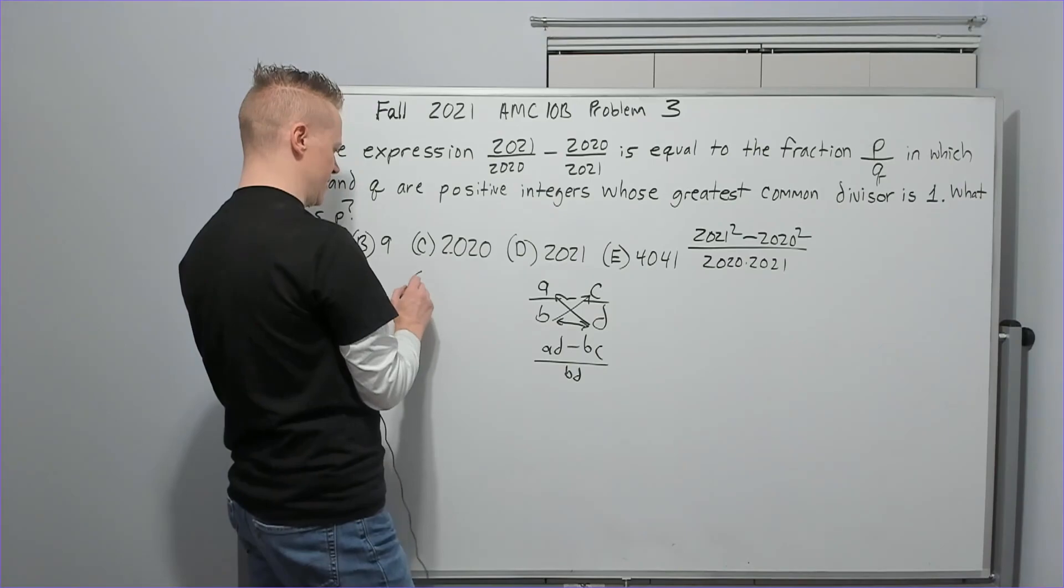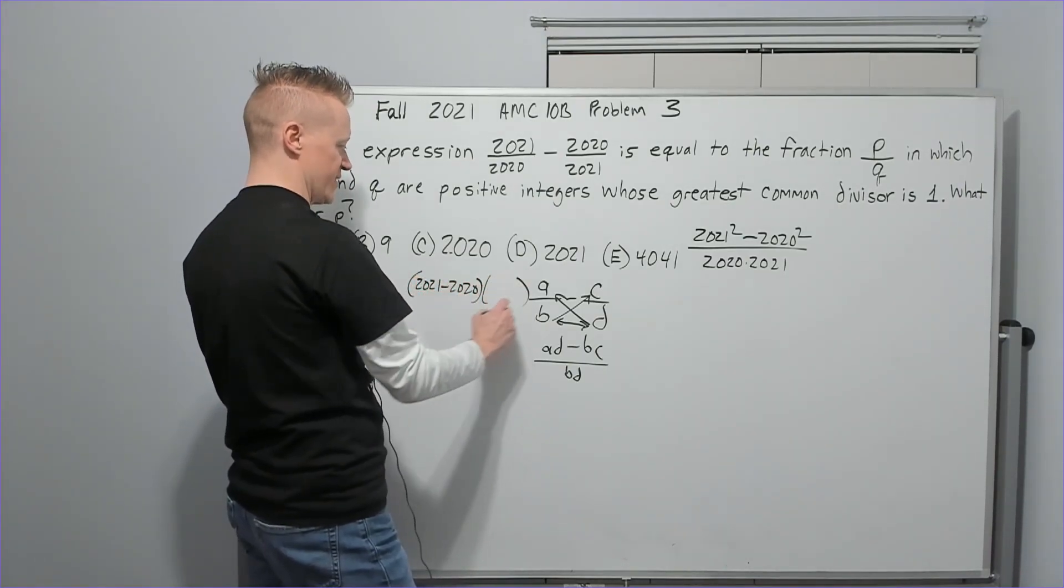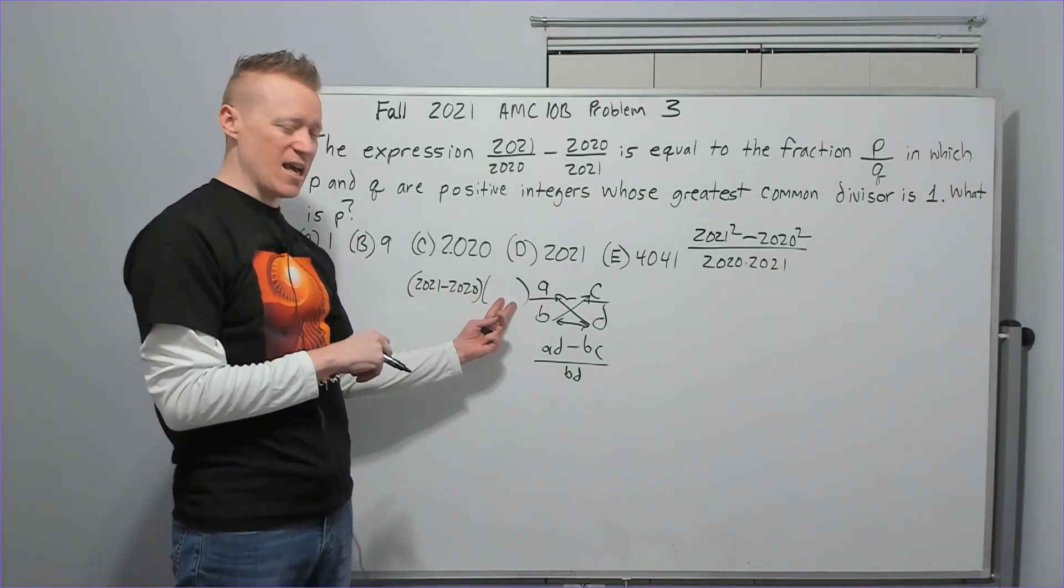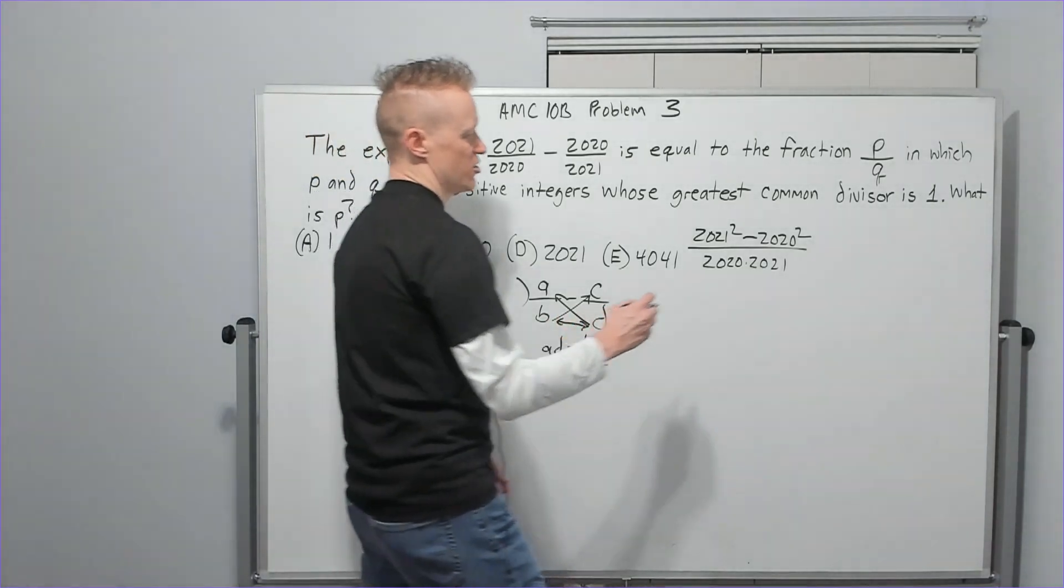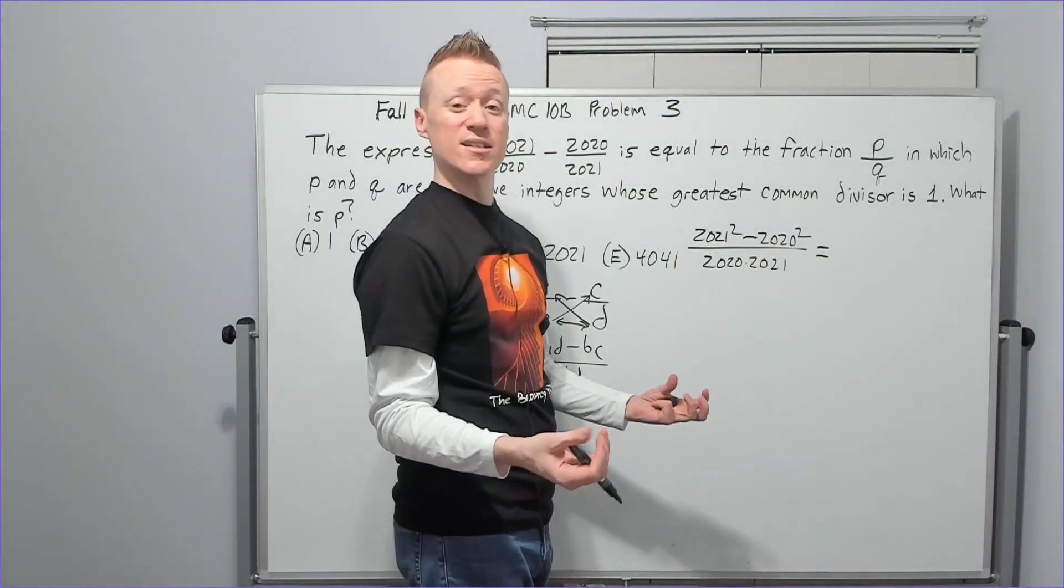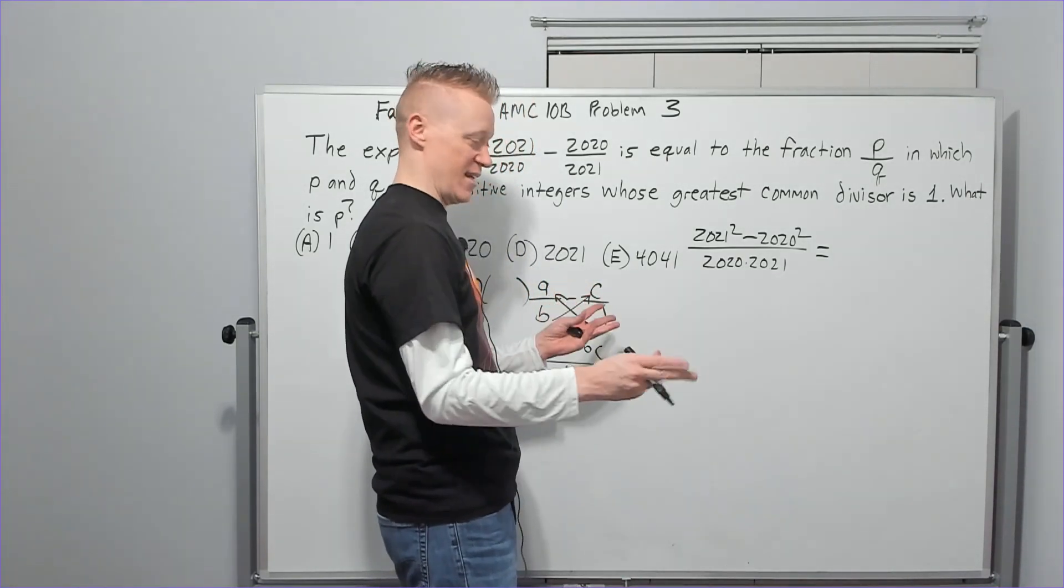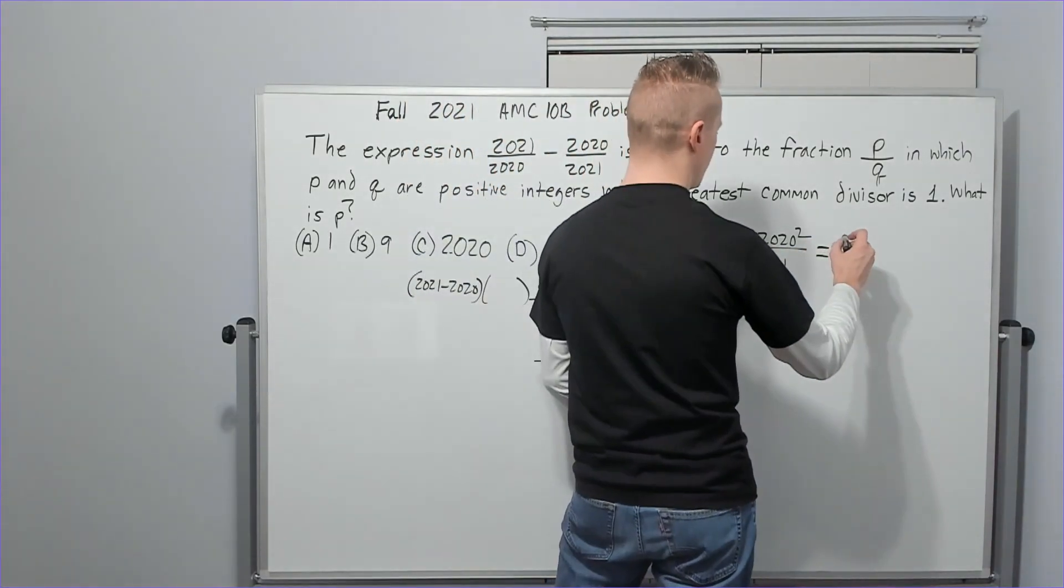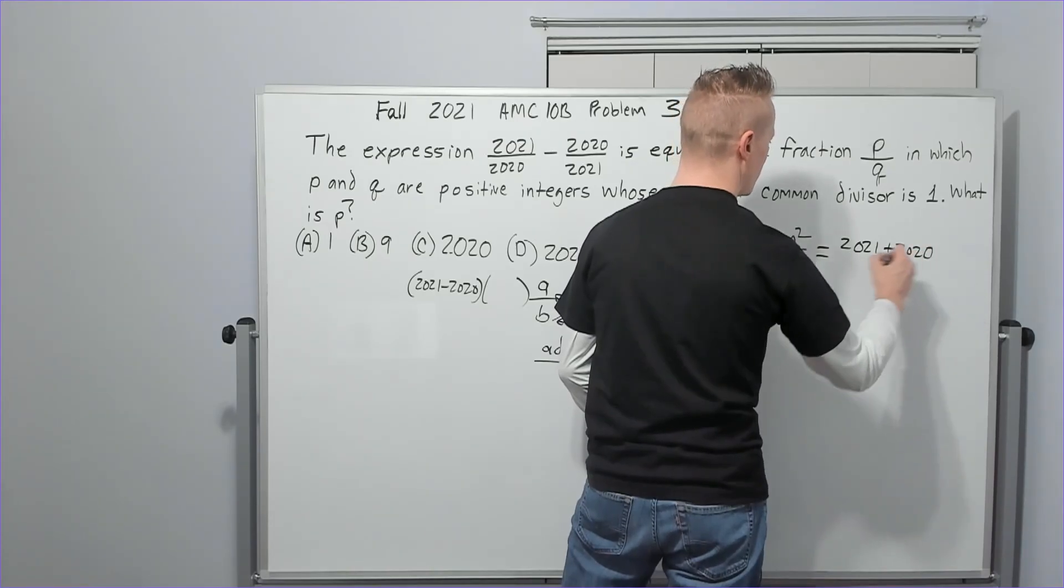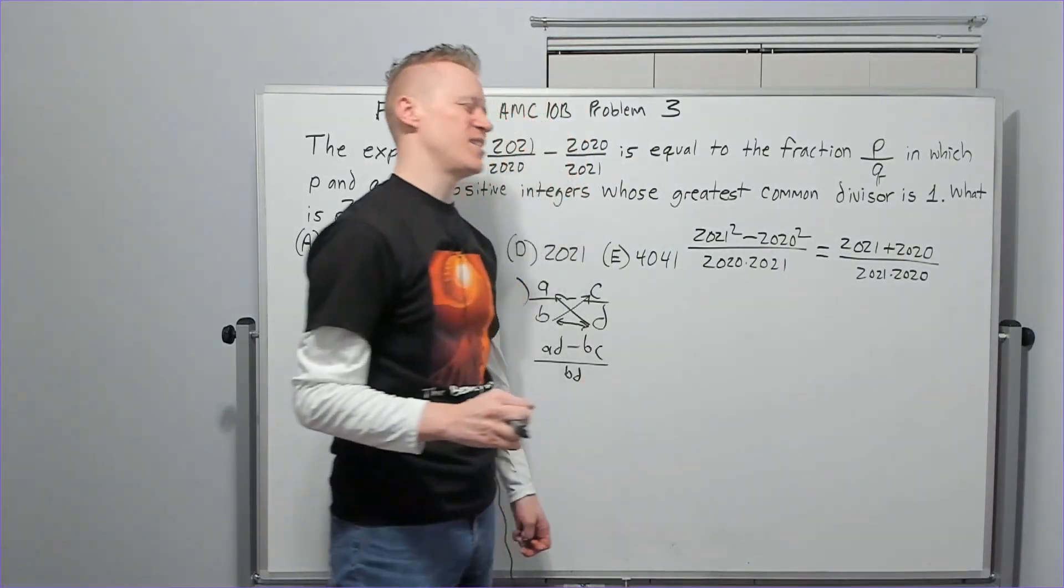So now we're going to have 2021² - 2020² over 2020 × 2021. You might recognize this is the difference of squares, and a² - b² is (a + b)(a - b). Also notice a - b is one, right? So 2021 - 2020 is one, which means the other expression is the numerator. You also might know the difference in consecutive squares is the sum of their bases.